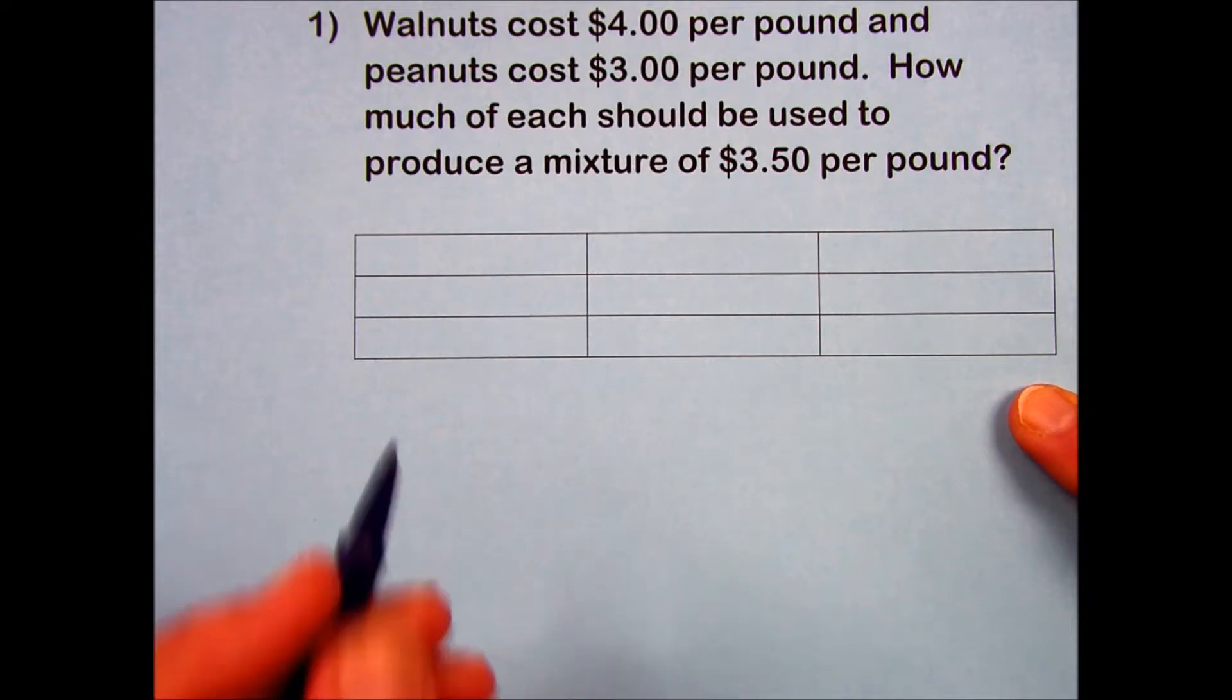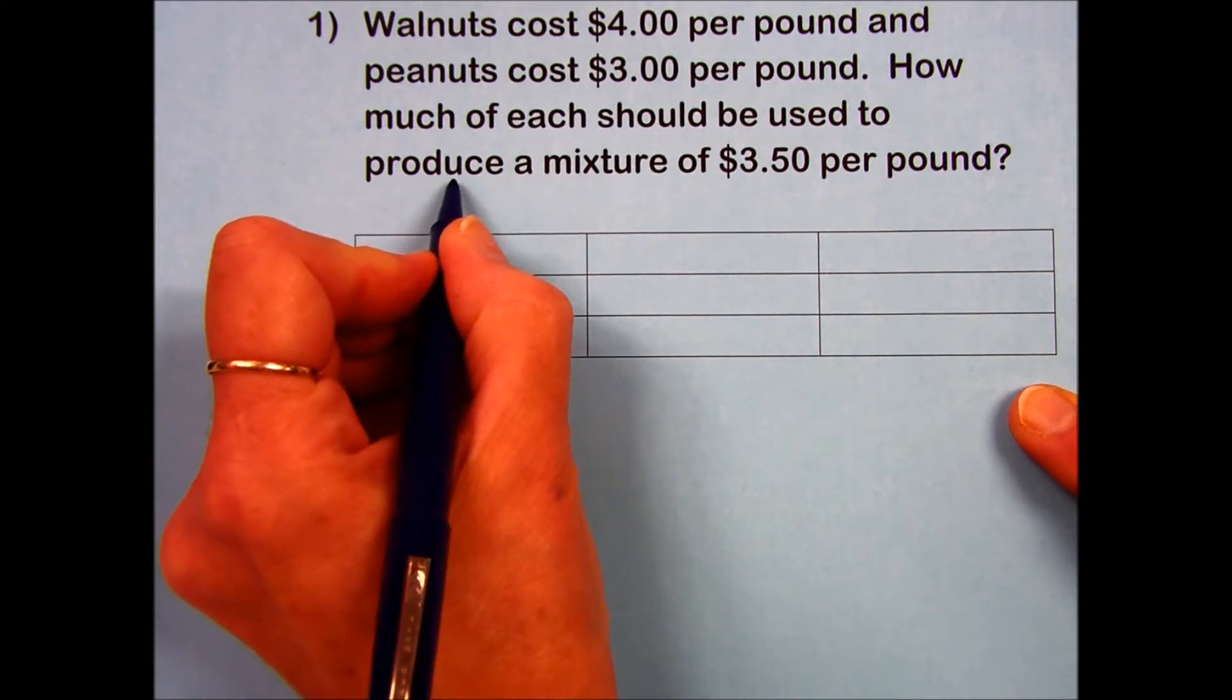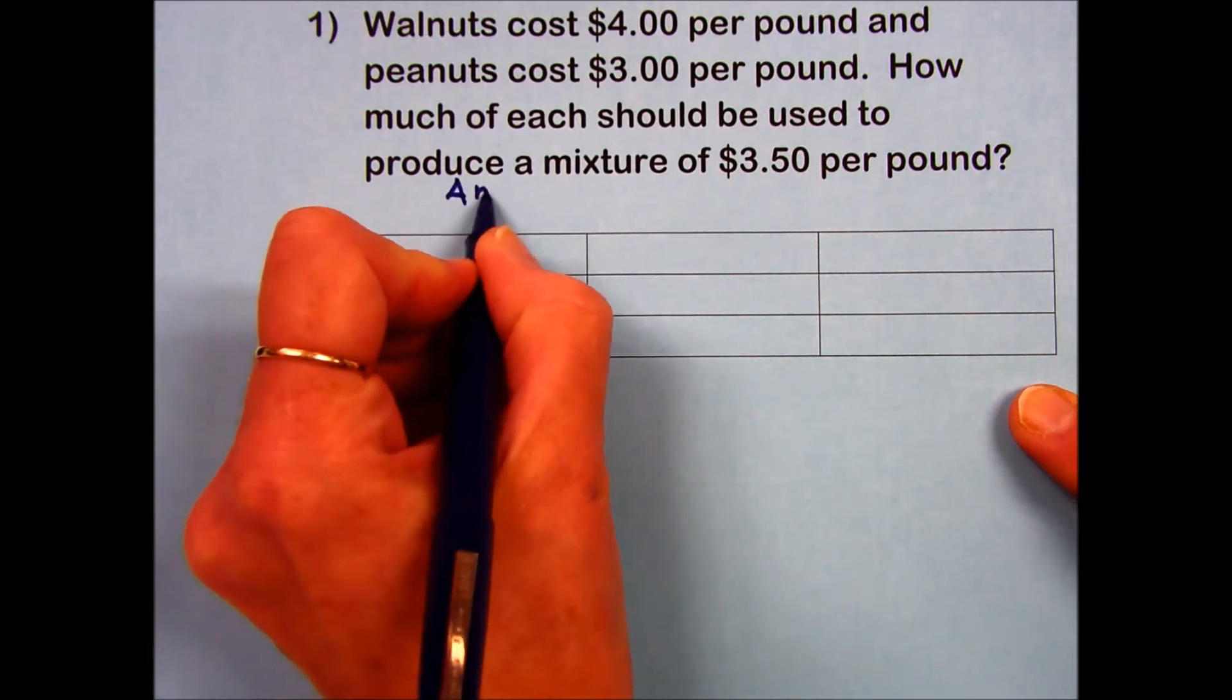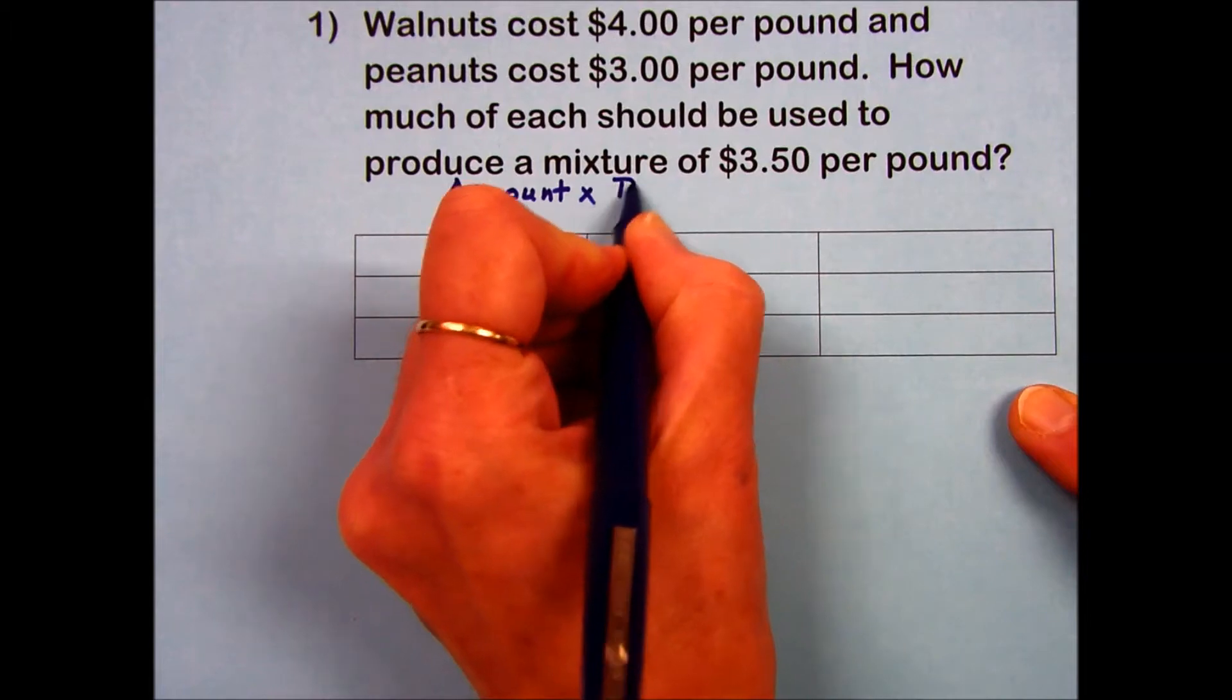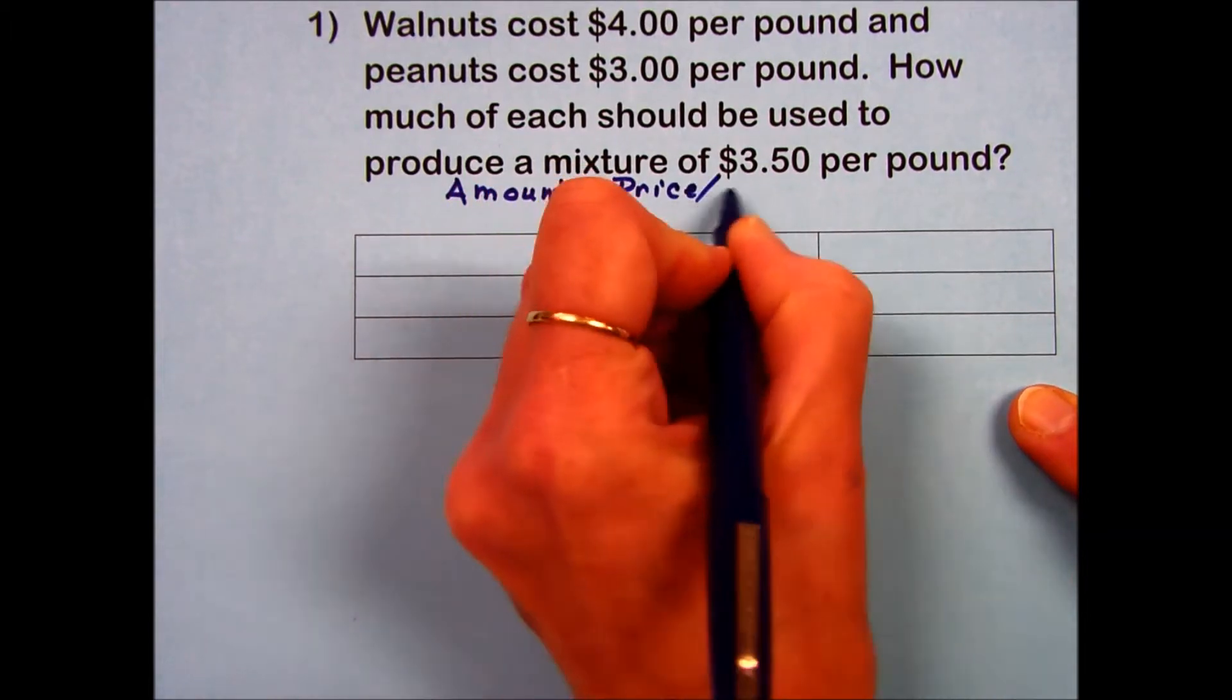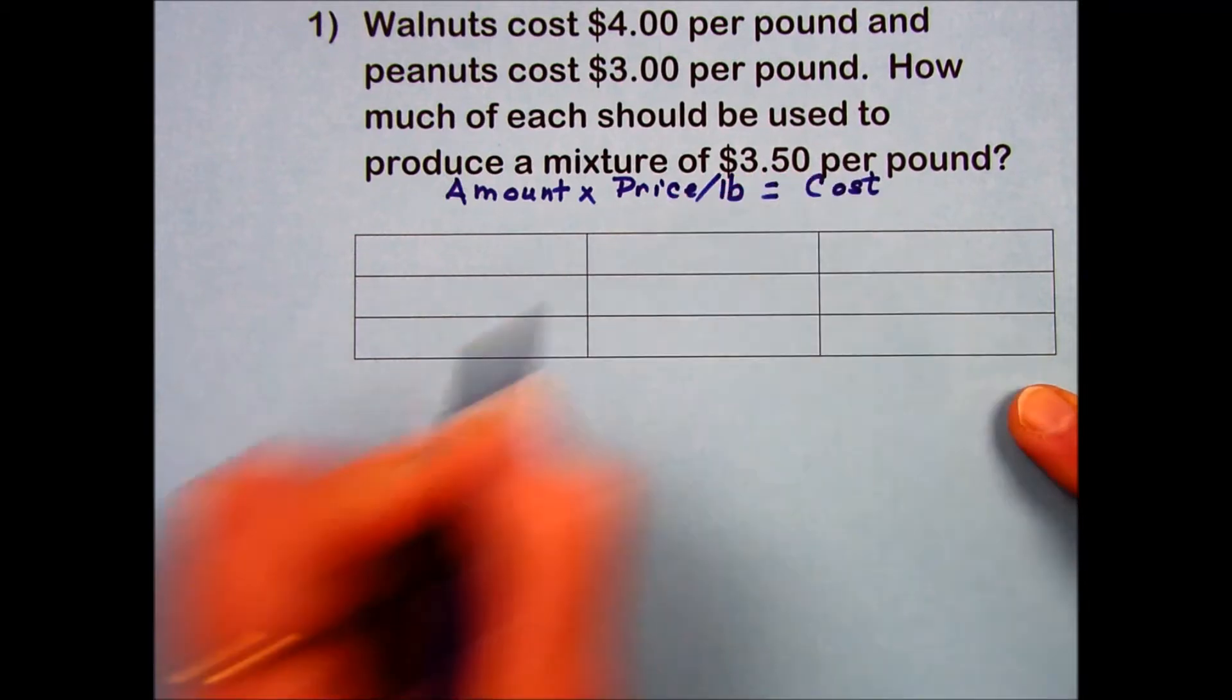This is a mixture problem involving weight and we're going to use the formula: amount times the price per pound, which I'm going to abbreviate, is equal to the cost.